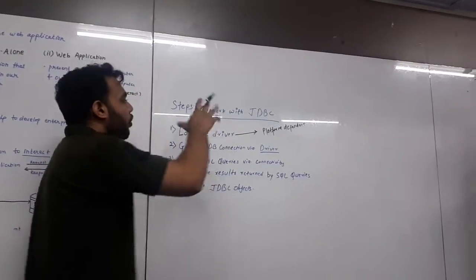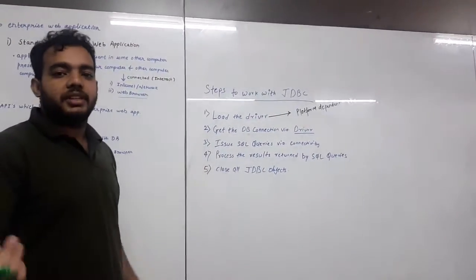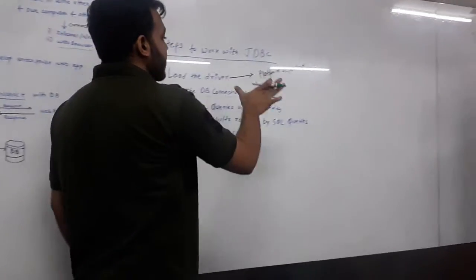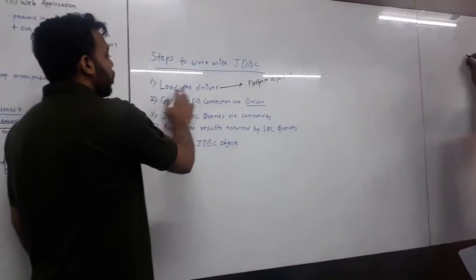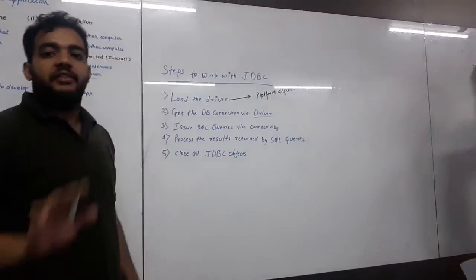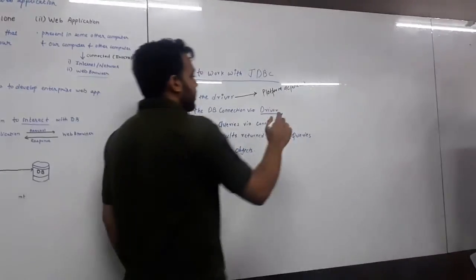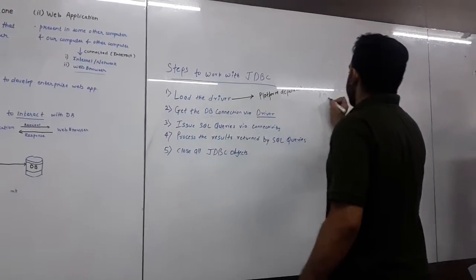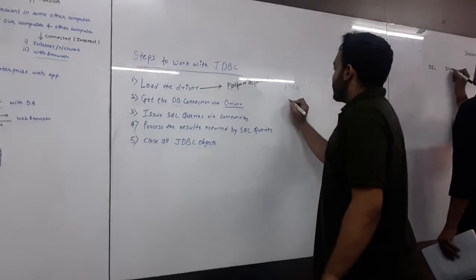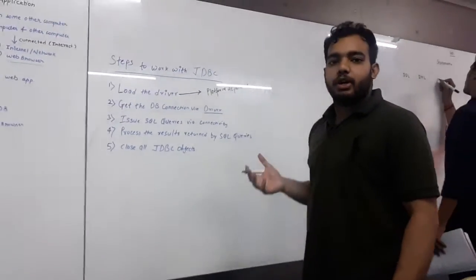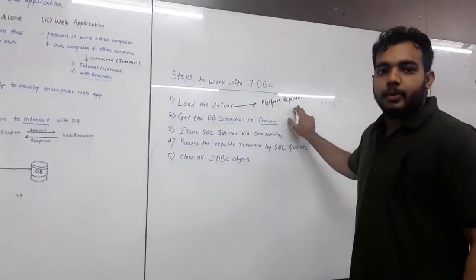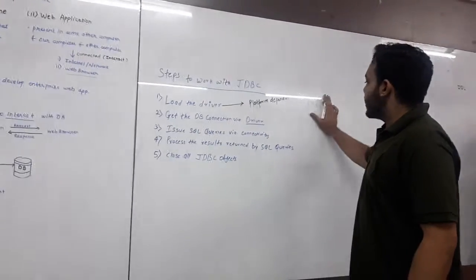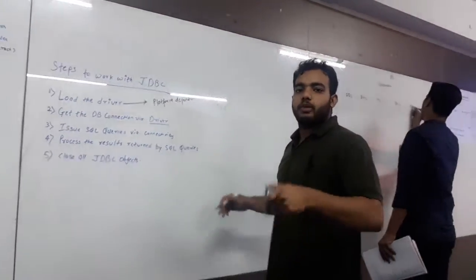Now let's see the overview of the steps to work with JDBC. There are 5 steps for JDBC to work. The first step is load the driver. Every database such as MySQL or Oracle has their own particular driver. Therefore it is platform dependent because every application needs its own driver to work.